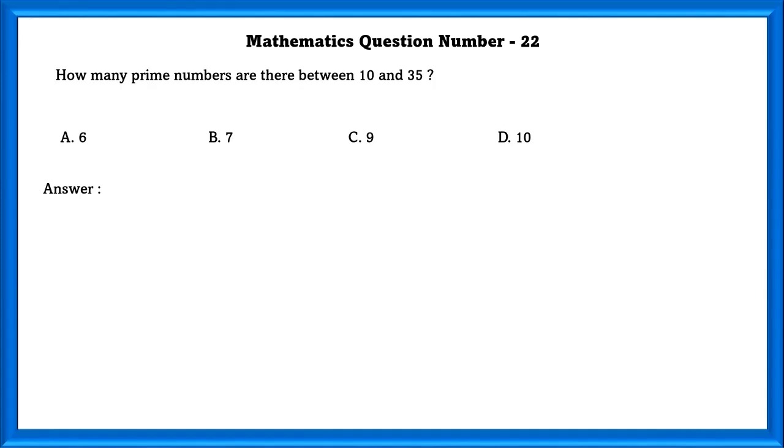Mathematics question number 22. How many prime numbers are there between 10 and 35? There are 7 prime numbers between these numbers.